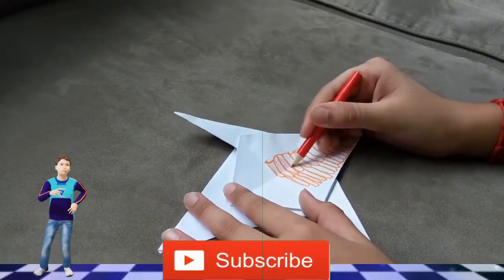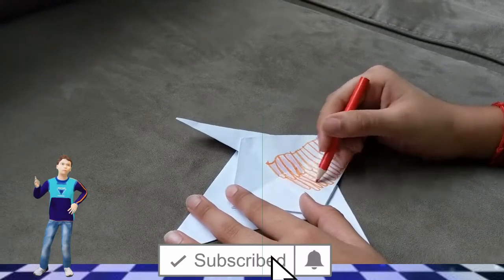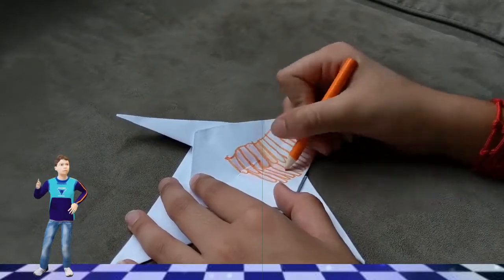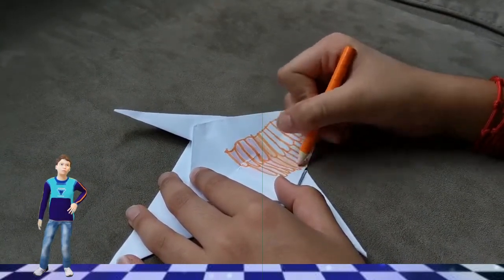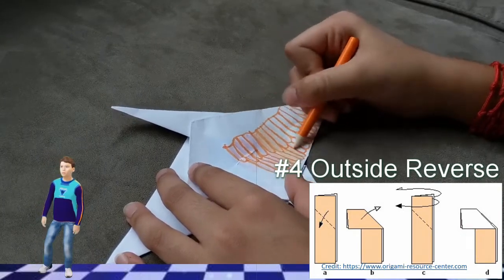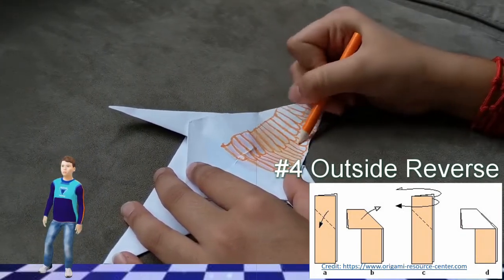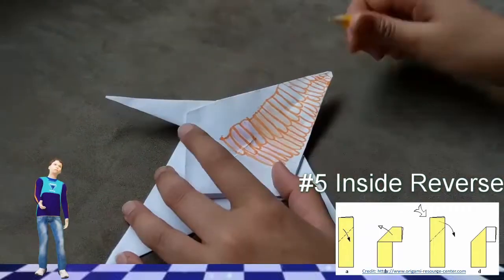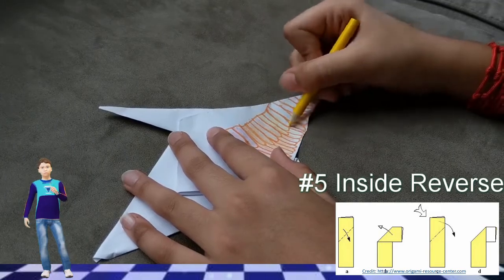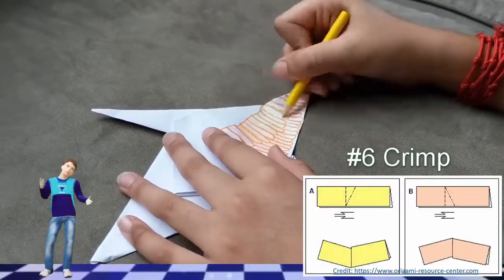Viewers, please click the subscribe button below to join our crafty fun and celebration. The remaining basic origami foldings are the outside rivers, inside rivers, the crimp.